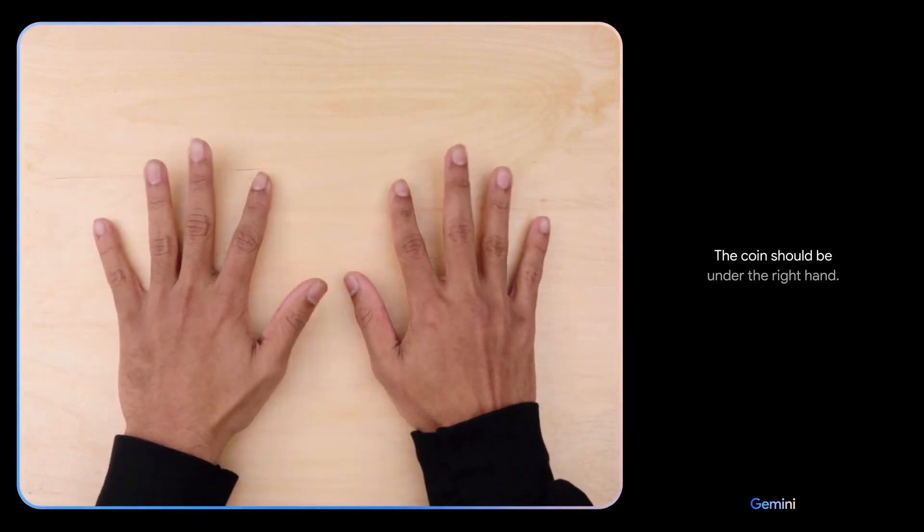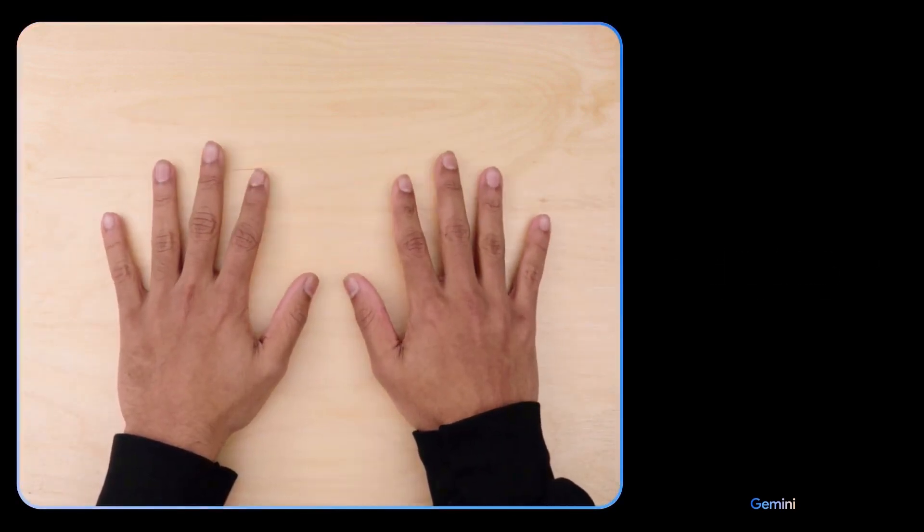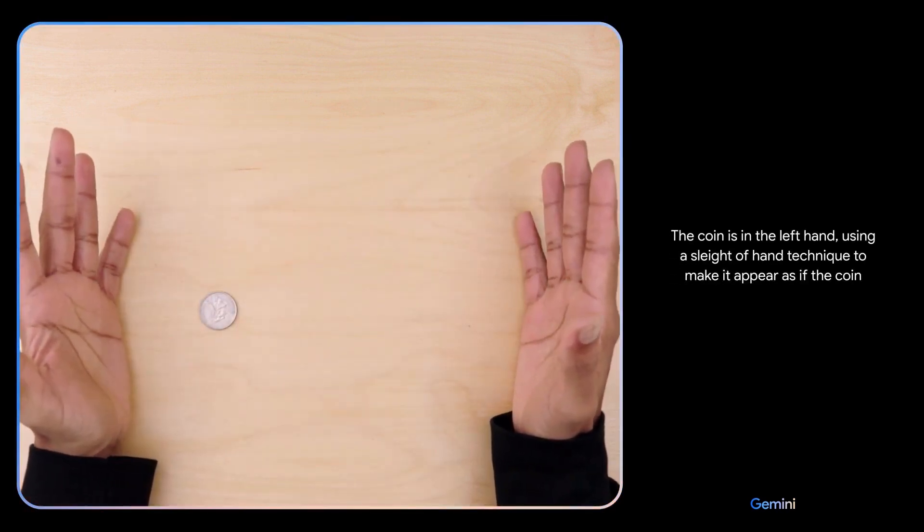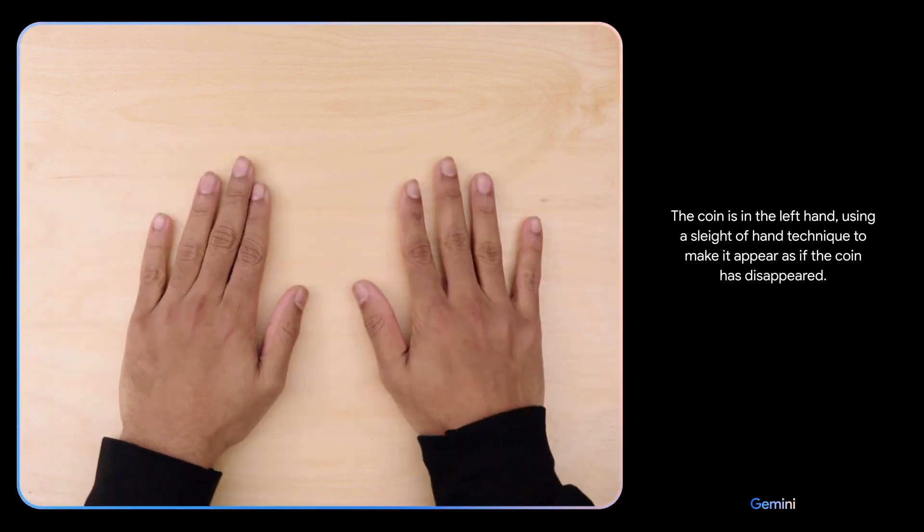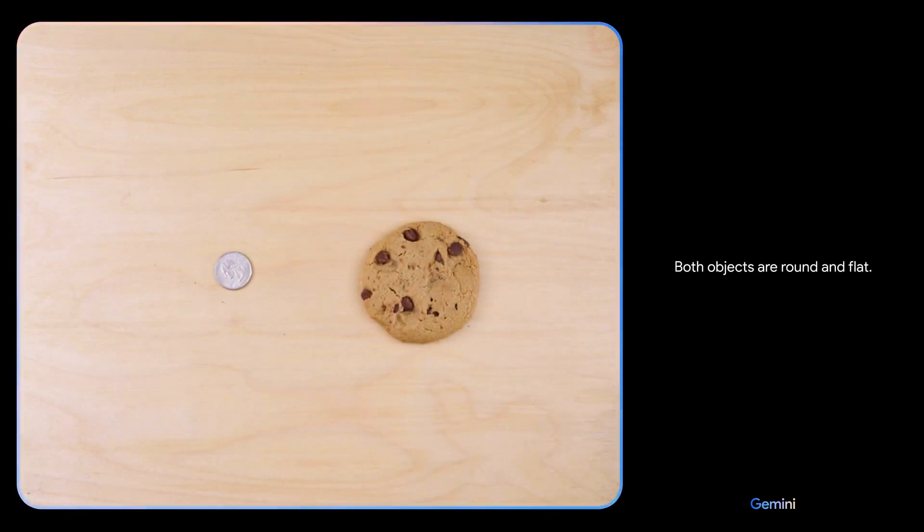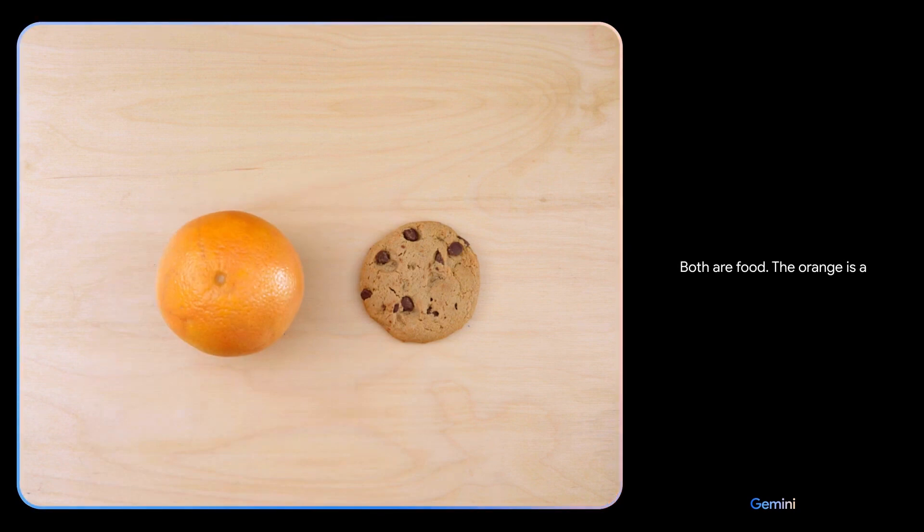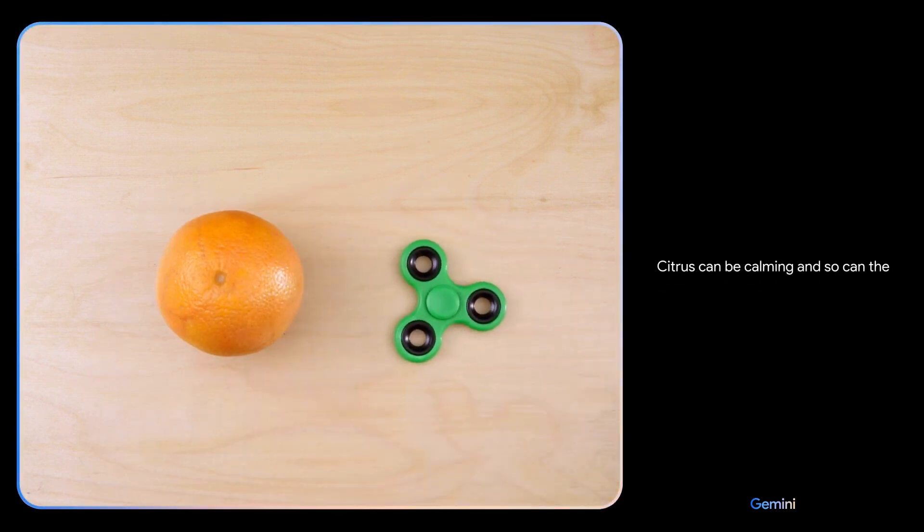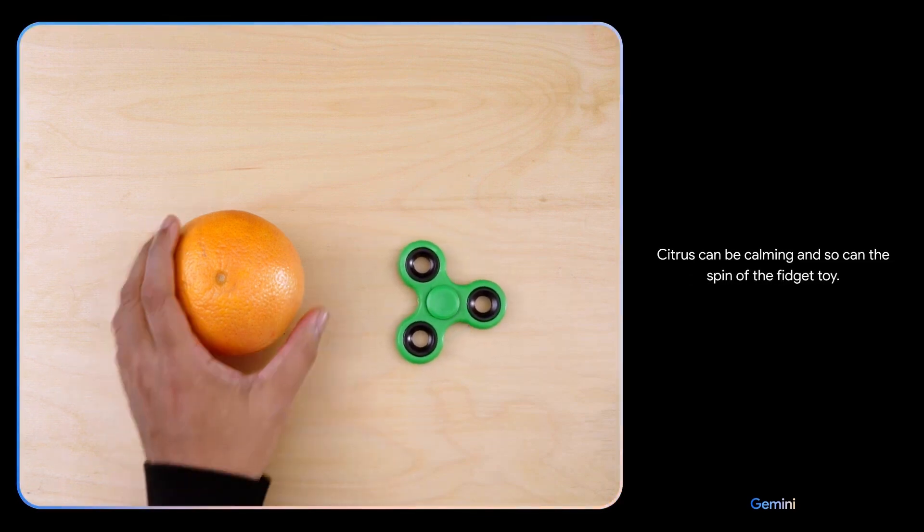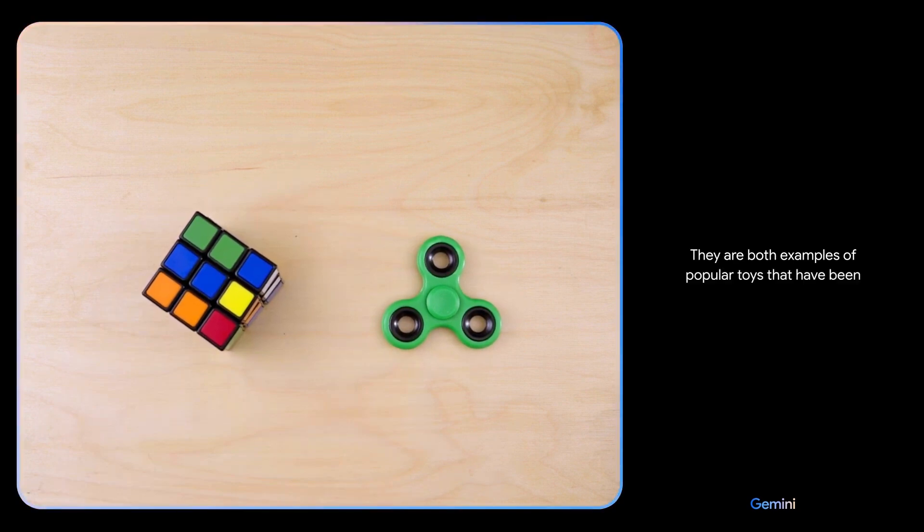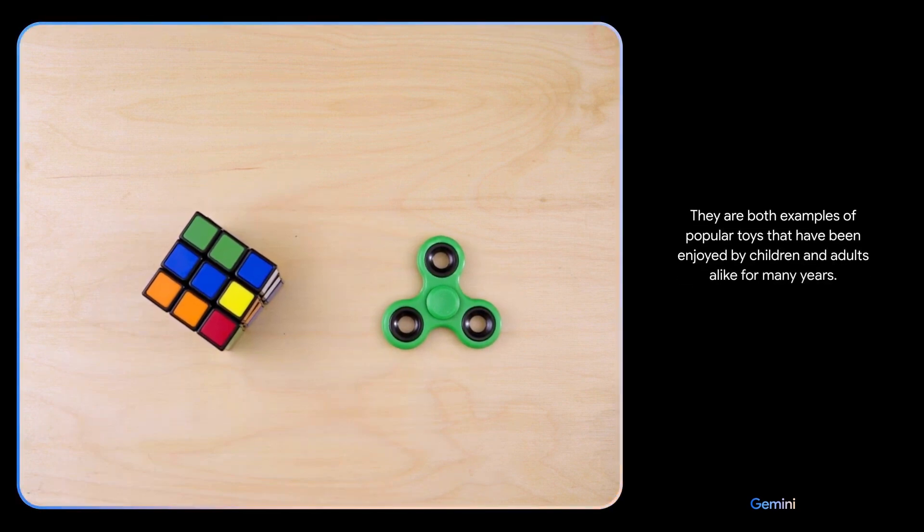The coin should be under the right hand. I don't know. The coin is in the left hand using a sleight-of-hand technique to make it appear as if the coin has disappeared. Both objects are round and flat. There you go. Both are food. The orange is a healthier choice than the cookie. Citrus can be calming and so can the spin of the fidget toy. They are both examples of popular toys that have been enjoyed by children and adults alike for many years.